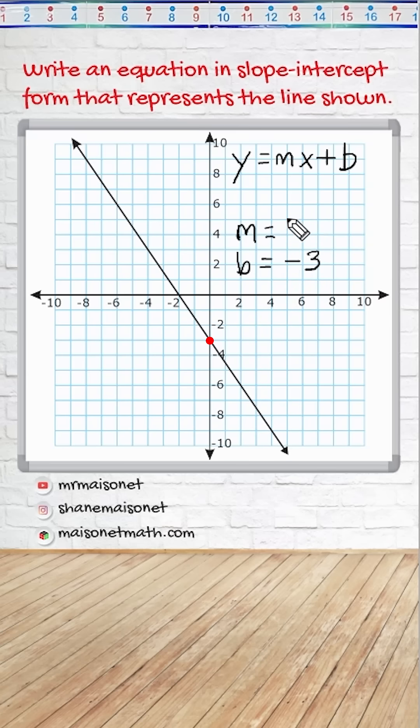Now before figuring out what the slope of this line is, what we should notice is that our line is going downwards from left to right, which means our slope is going to have a negative value.